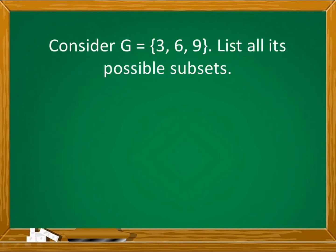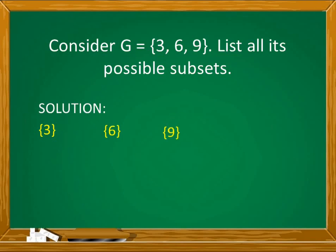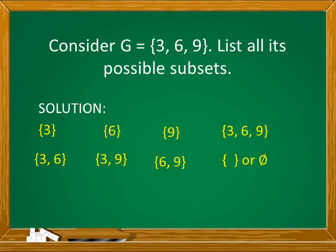Another example: consider G as a set with elements 3, 6, and 9. List all its possible subsets. Since there are 3 elements, it is also 2 raised to 3, so we have 8 subsets for set G. Subsets with 1 element: {3}, {6}, and {9}. Subsets with 2 elements: {3,6}, {3,9}, and {6,9}. Subset with all 3 elements: {3,6,9}. And do not forget the empty set or null set. That's all 8.